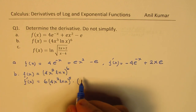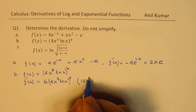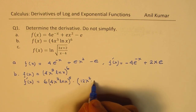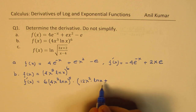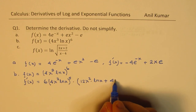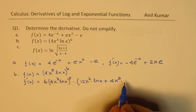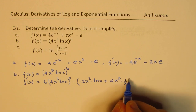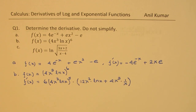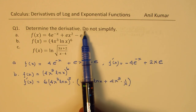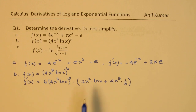So doing it in shortcut form: 12x squared is the derivative of the first part, times ln x, plus 4x cubed times the derivative of ln x which is 1 over x. You need not simplify this since it is very clearly written 'do not simplify,' so you can leave it at this particular stage.